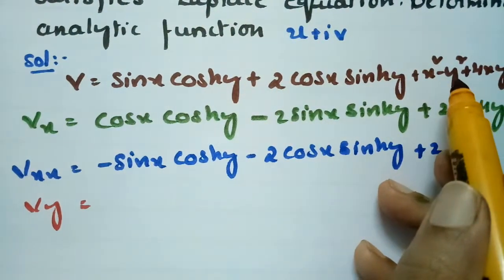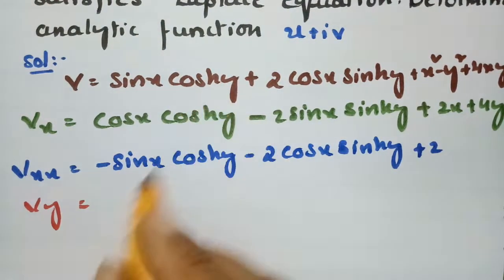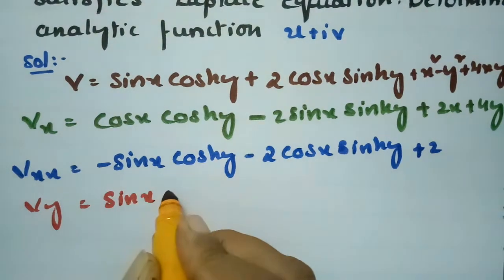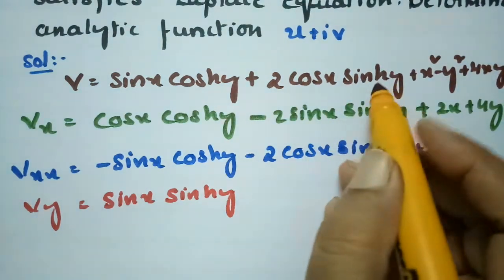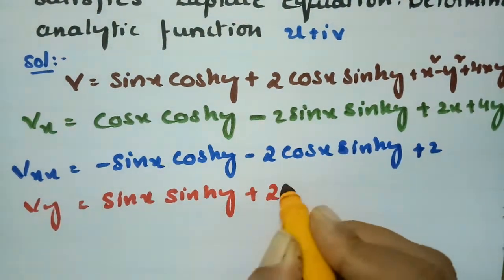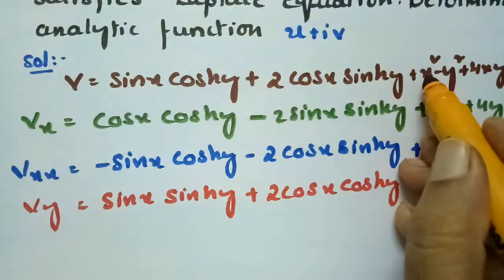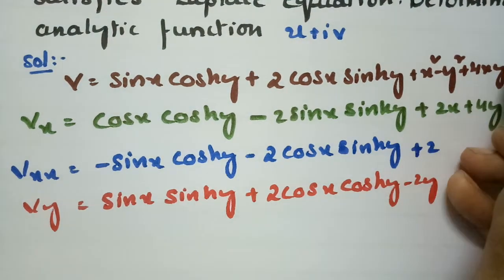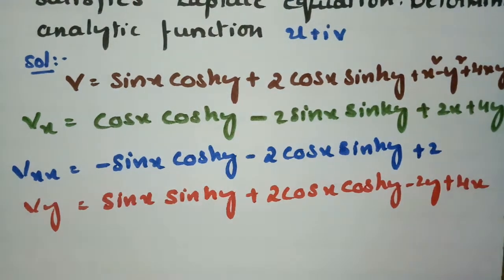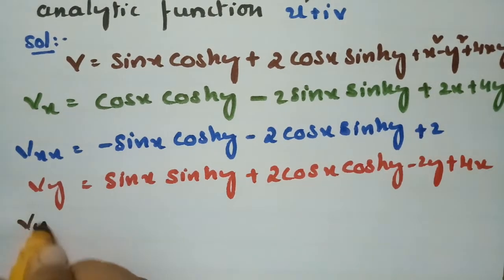Now I differentiate v with respect to y. For cosh(y) this is sinh(y), giving sin(x)sinh(y). For sinh(y) differentiated we get cosh(y), so this is 2cos(x)cosh(y). For x squared the y derivative is 0, for y squared this is minus 2y, and 4xy gives 4x.